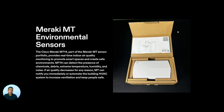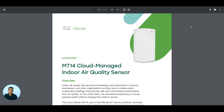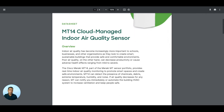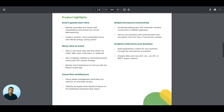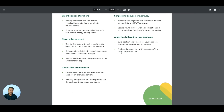Let's go to the datasheet and understand about Meraki MT14 a little bit more. This is the MT14 Cloud Managed Indoor Air Quality Sensor datasheet. It can measure temperature, humidity, air quality, noise, etc. You can also use MQTT and other APIs. You can see 'never miss out on an event' — that means you have the alerting capability. You can get real-time alerts via email, SMS, or push notification. Because monitoring without alerting is no good.